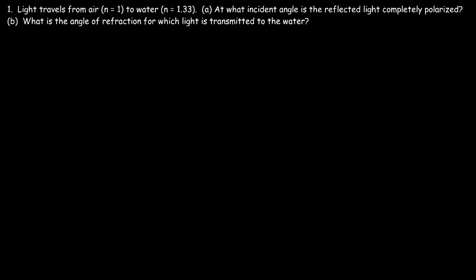In this video we're going to talk about how to calculate Brewster's angle and also the polarizing angle. First let's go over this problem: light travels from air to water — at what incident angle is the reflected light completely polarized? Let's find out. We have air on top and water beneath.